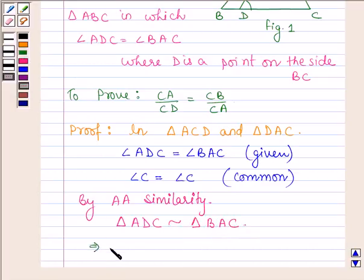And this implies that CA divided by CD equals CB divided by CA.